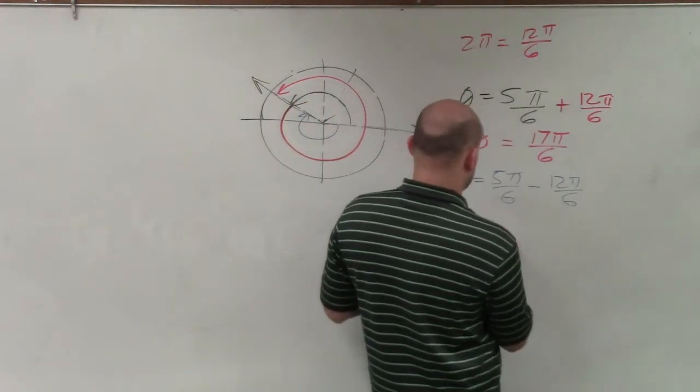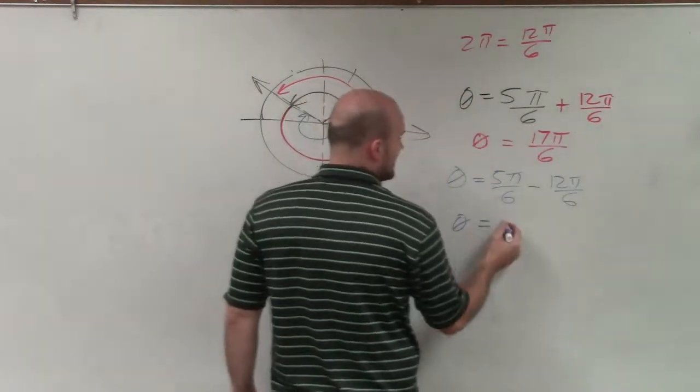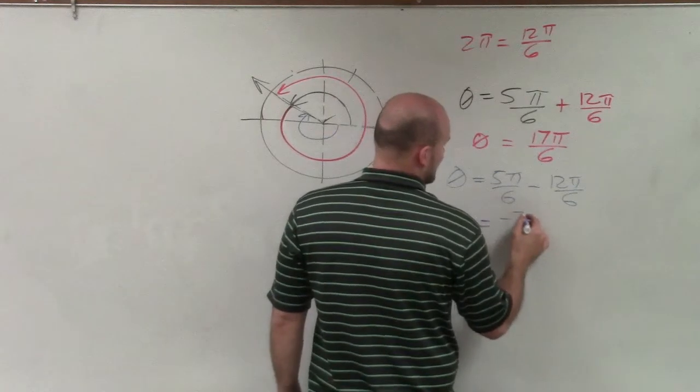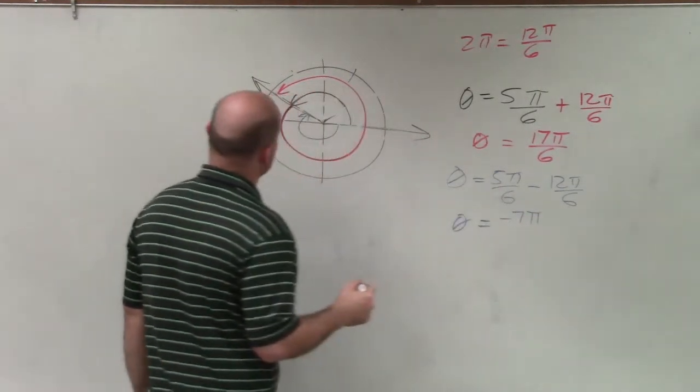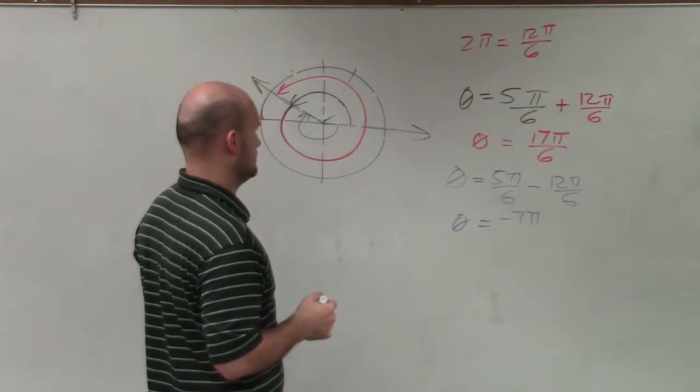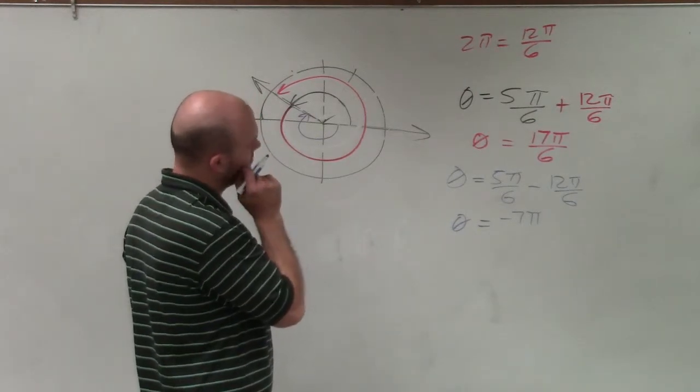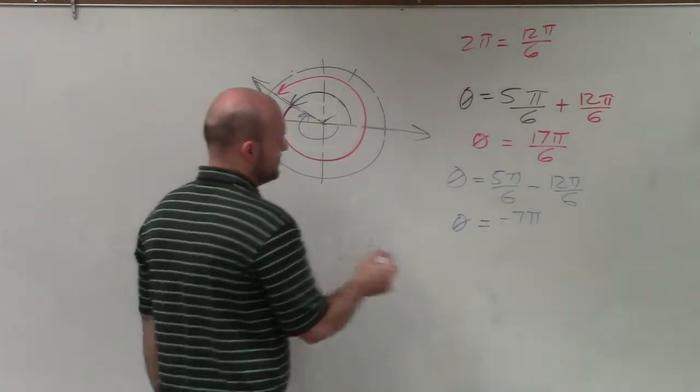And that's going to leave me now with my smallest negative angle, which is negative 7π over 6.